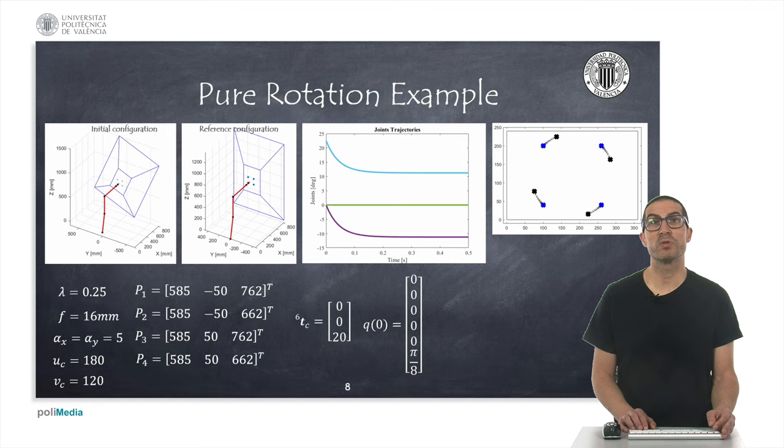After applying the proposed visual feedback control, the robot converges to a configuration so that the observed points match the reference points marked with blue crosses in the figure on the right. In fact, it should have converged to the configuration with all joints at zero, but since this configuration is singular because joints four and six are coincident,